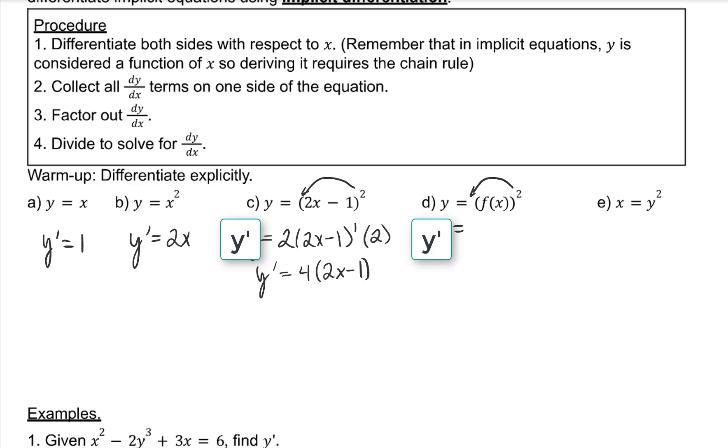Again, we're going to do the general power rule. So pop down, power down. What goes inside? U. What goes outside? U prime.